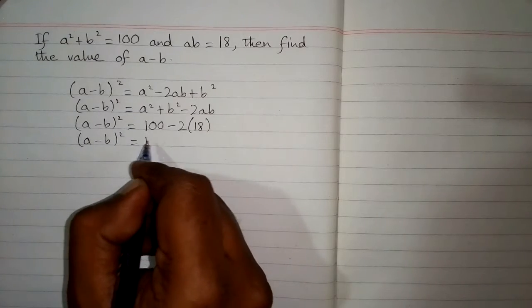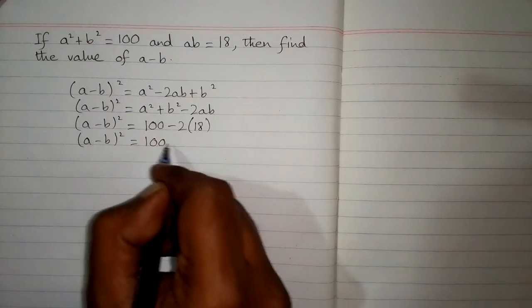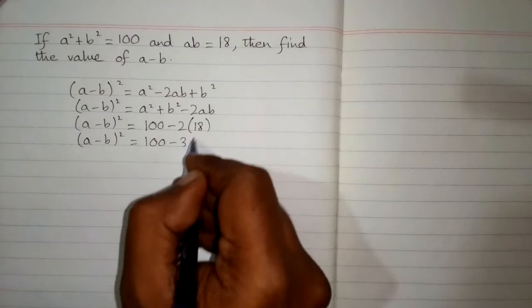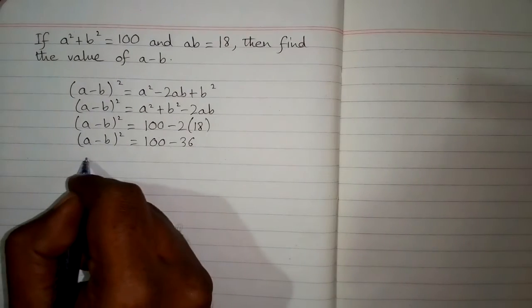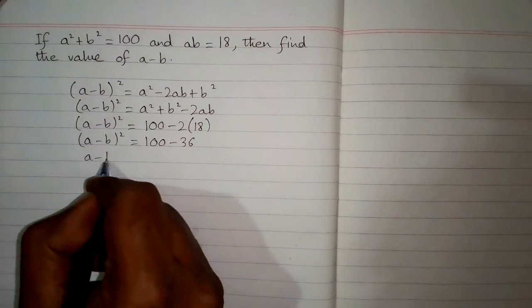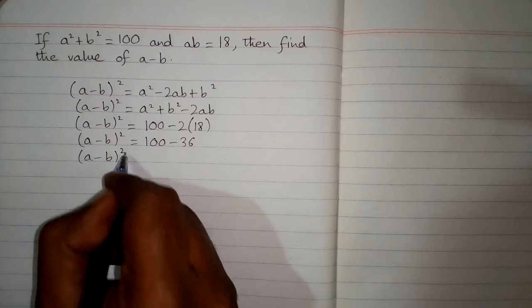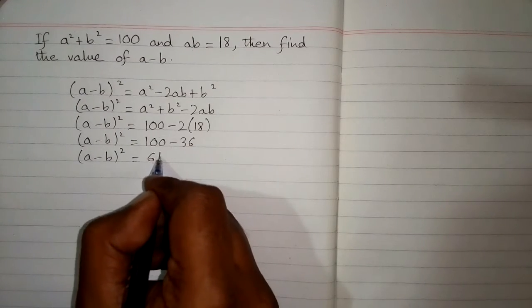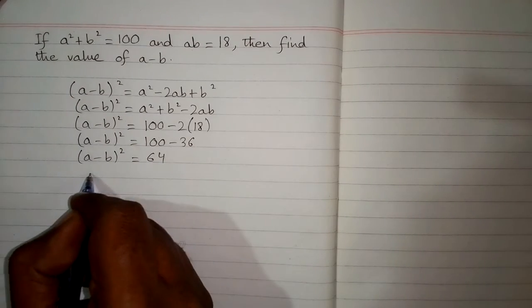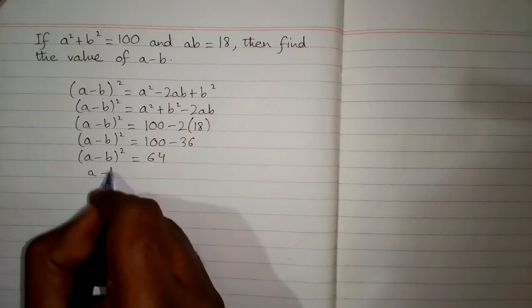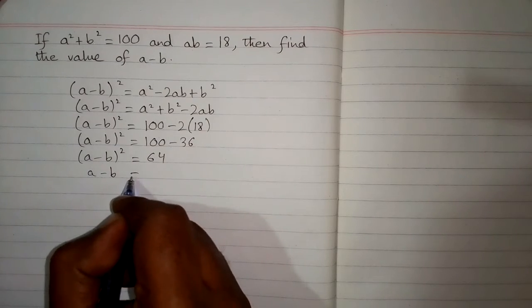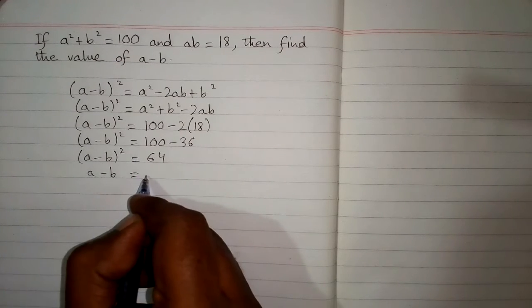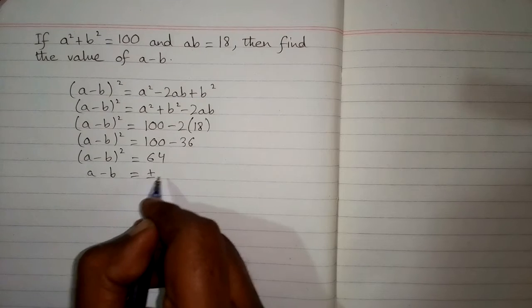Now (a minus b) whole square is equal to 100 minus 2 times 18, and 2 times 18 is 36. So (a minus b) whole square is equal to 100 minus 36, which is equal to 64. Then we take the square root of both sides.